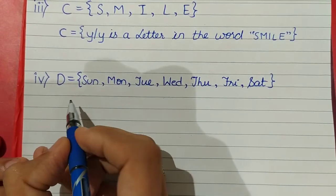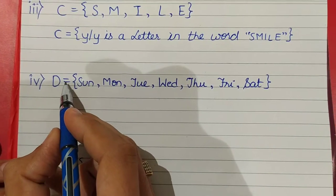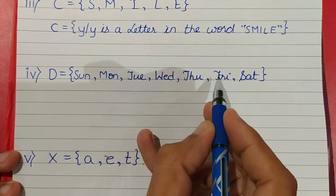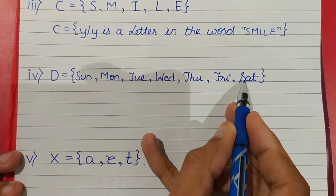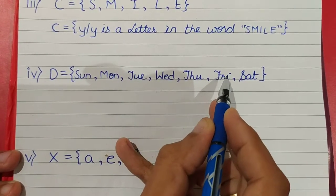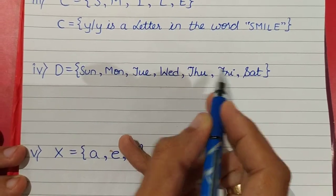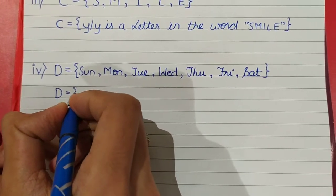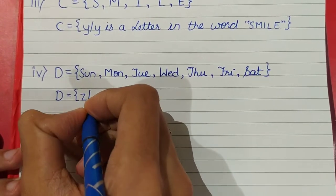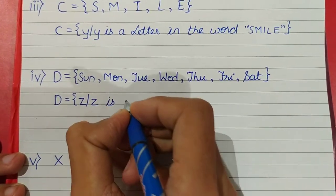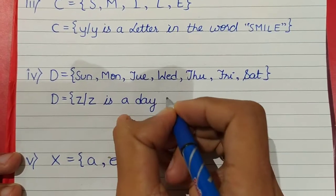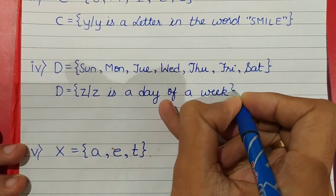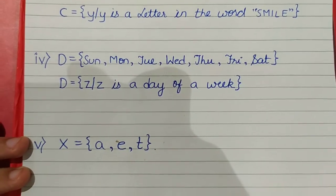Now let's see the next example. D is equal to Sunday, Monday, Tuesday, Wednesday, Thursday, Friday, Saturday. All these are nothing but days of a week. So we can write it in set builder form as D = { z such that z is a day of a week }.